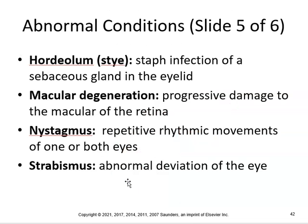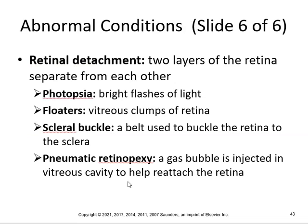Hordeolum is a stye — a staph infection of the sebaceous gland in the eyelid. Macular degeneration is progressive damage to the macula of the retina. Nystagmus is repetitive rhythmic movements of one or both eyes. Strabismus is abnormal deviation of the eye — whether you have crossed eyes or a lazy eye. Retinal detachment: two layers of the retina separate from each other — bungee jumping is notorious for that. You can get photopsia, which is bright flashes of light, and floaters. Treatment includes a scleral buckle, which is a belt used to buckle the retina to the sclera, and pneumatic retinopexy, where a gas bubble is injected into the vitreous cavity to help reattach the retina.